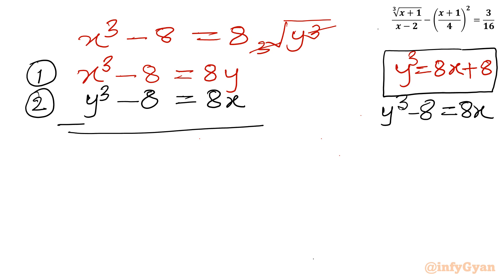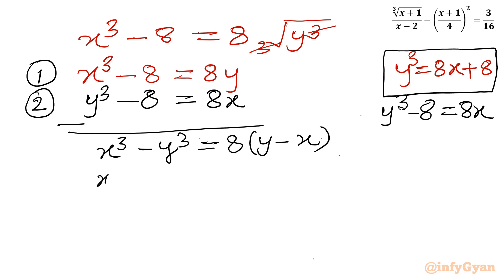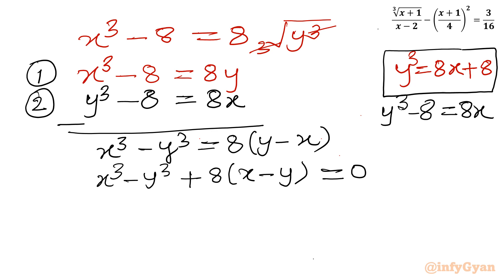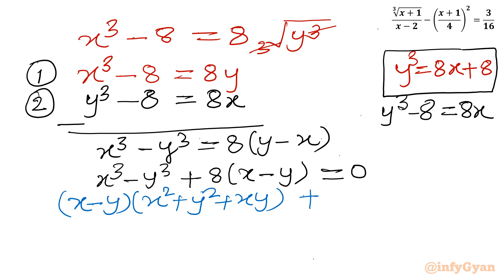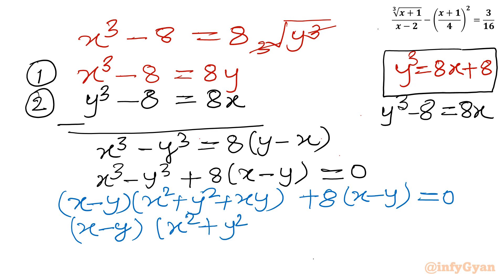Subtracting Equation 2 from Equation 1: x³ - y³ = 8(y - x), or equivalently x³ - y³ + 8(x - y) = 0. Applying the a³ - b³ identity: (x - y)(x² + y² + xy) + 8(x - y) = 0. Taking (x - y) common: (x - y)(x² + y² + xy + 8) = 0. Since the product is 0, each factor can equal 0.